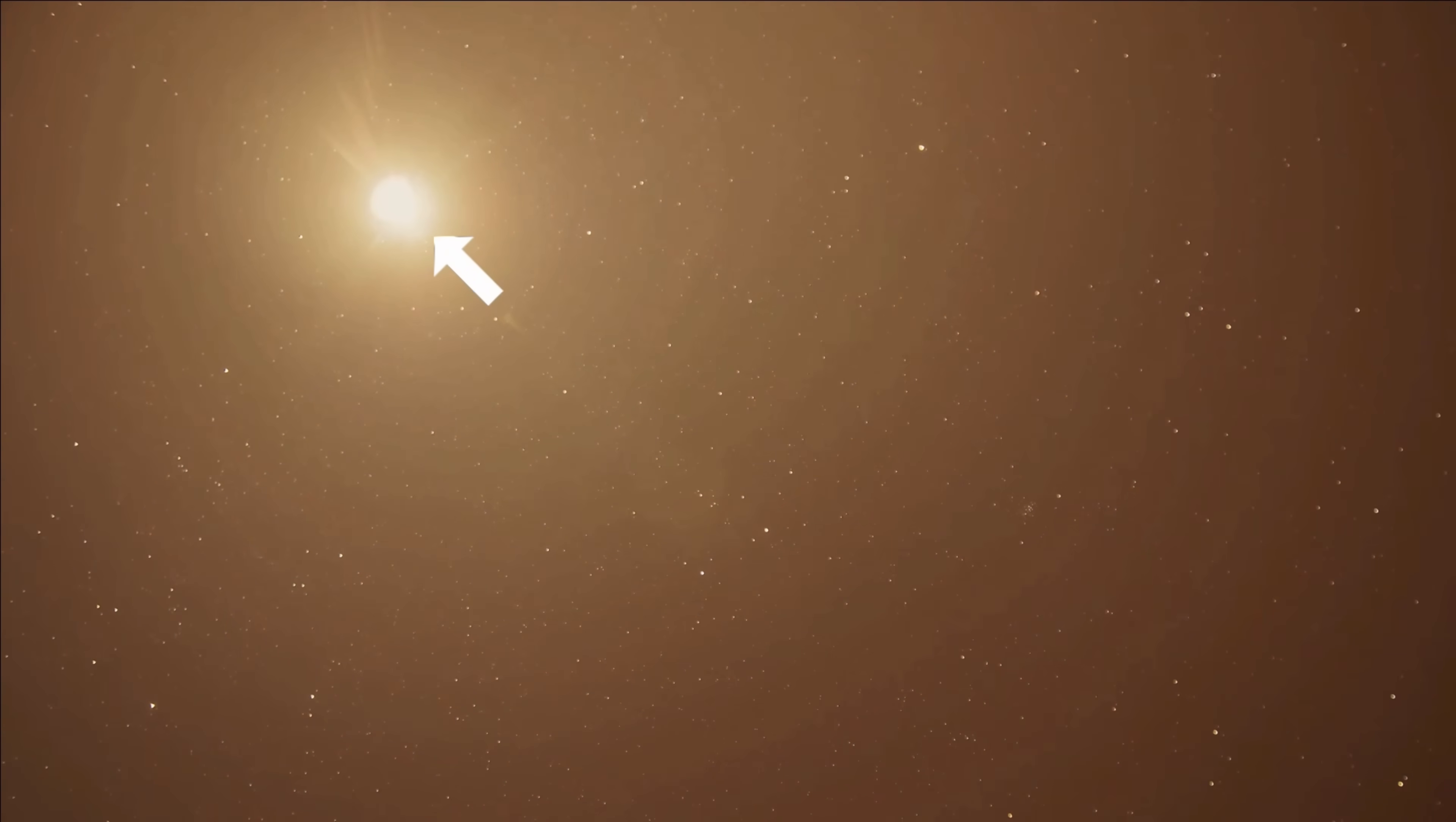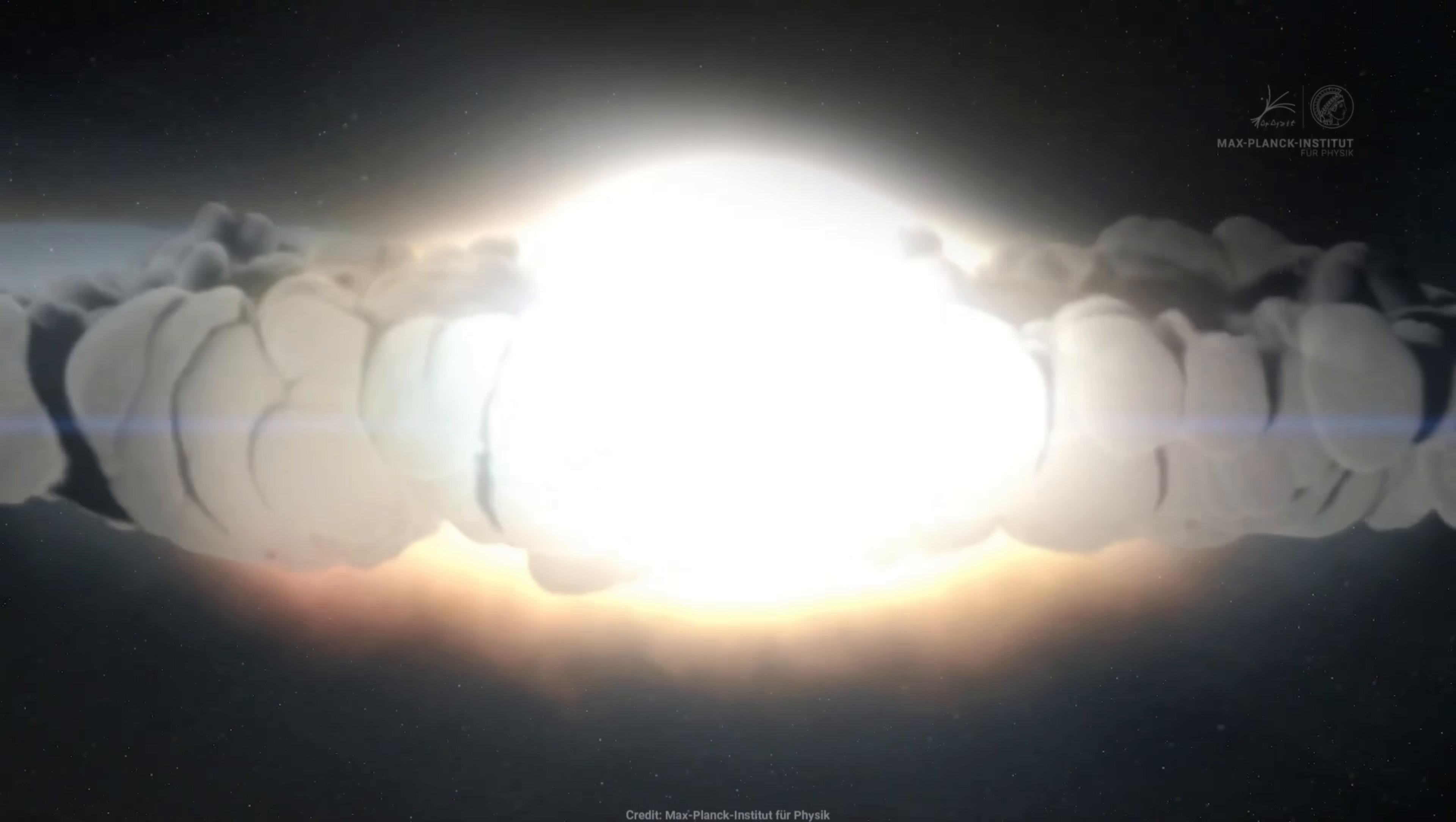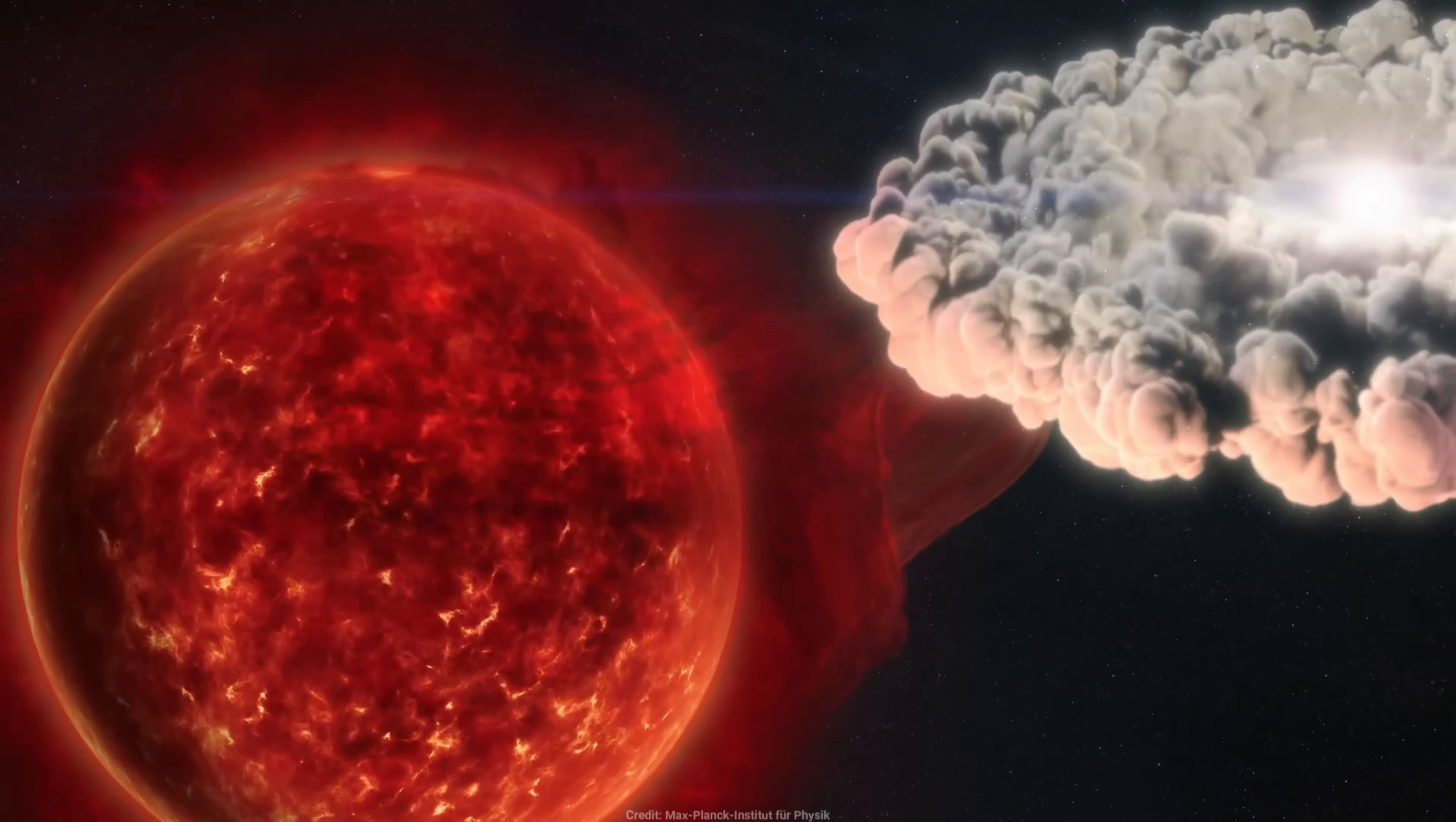Yes, every 80 years, T Coronae Borealis puts on a show for us here on Earth. As the white dwarf draws off material from the red giant, it gradually accumulates on its surface. Over decades, this process leads to the buildup of a critical mass of hydrogen on the white dwarf's surface. Once enough hydrogen has been gathered, a powerful thermonuclear reaction ignites, a runaway fusion event that causes the star to explode in a spectacular nova.